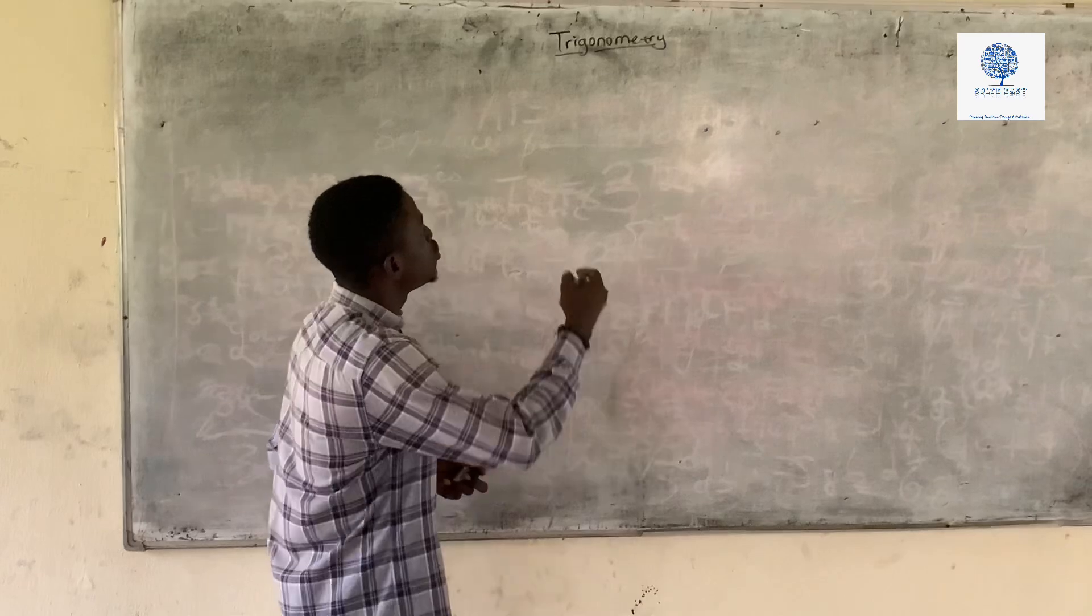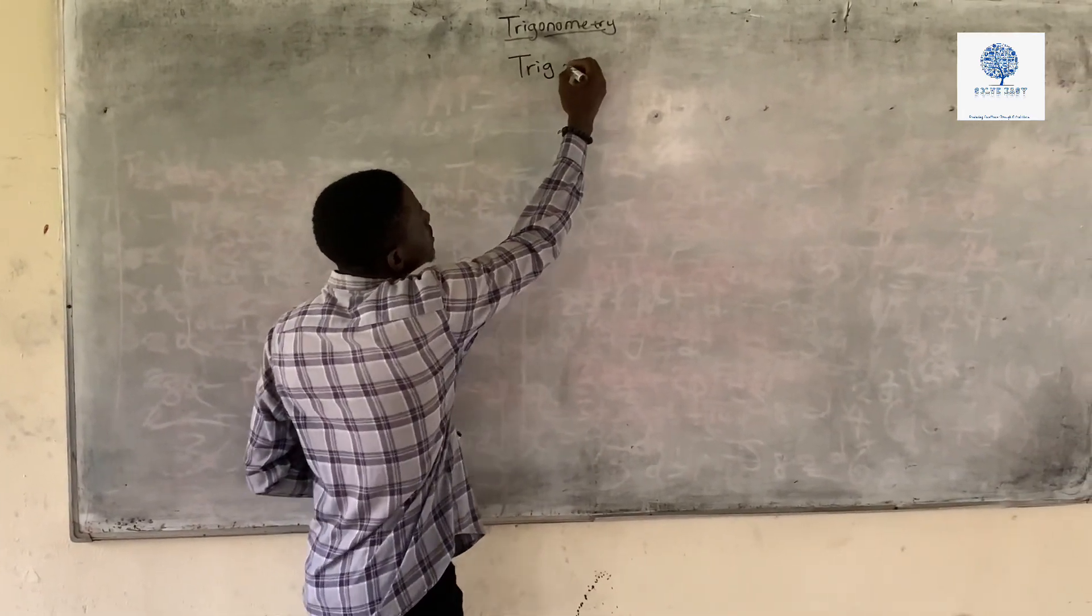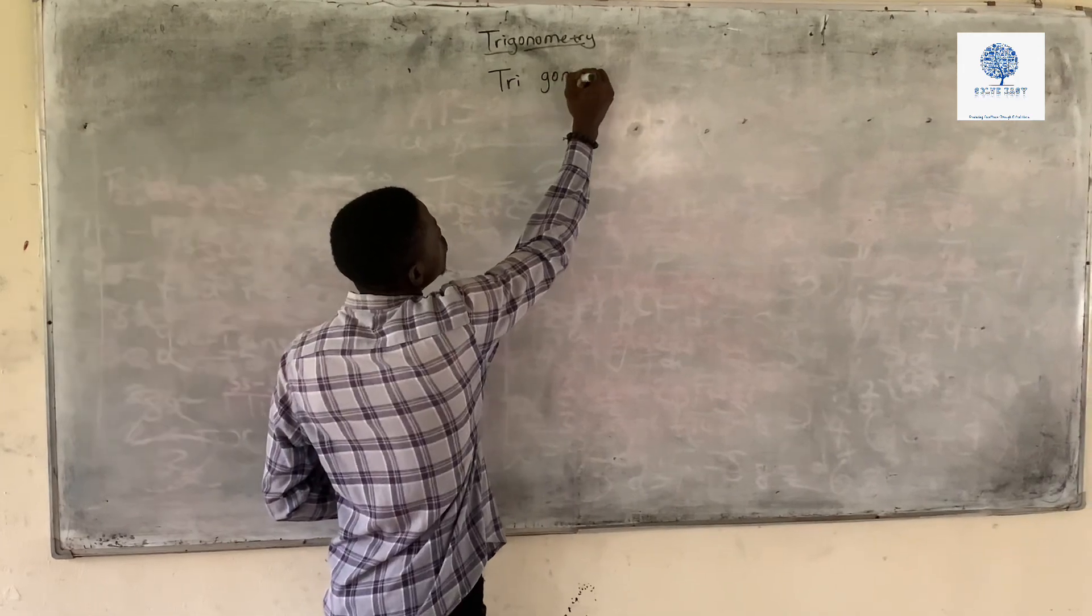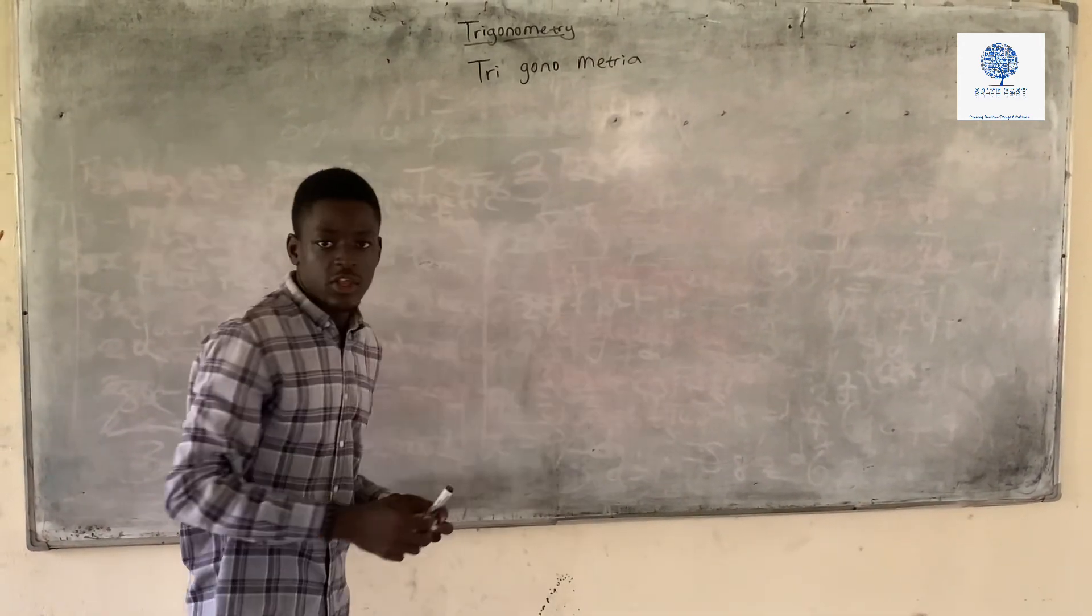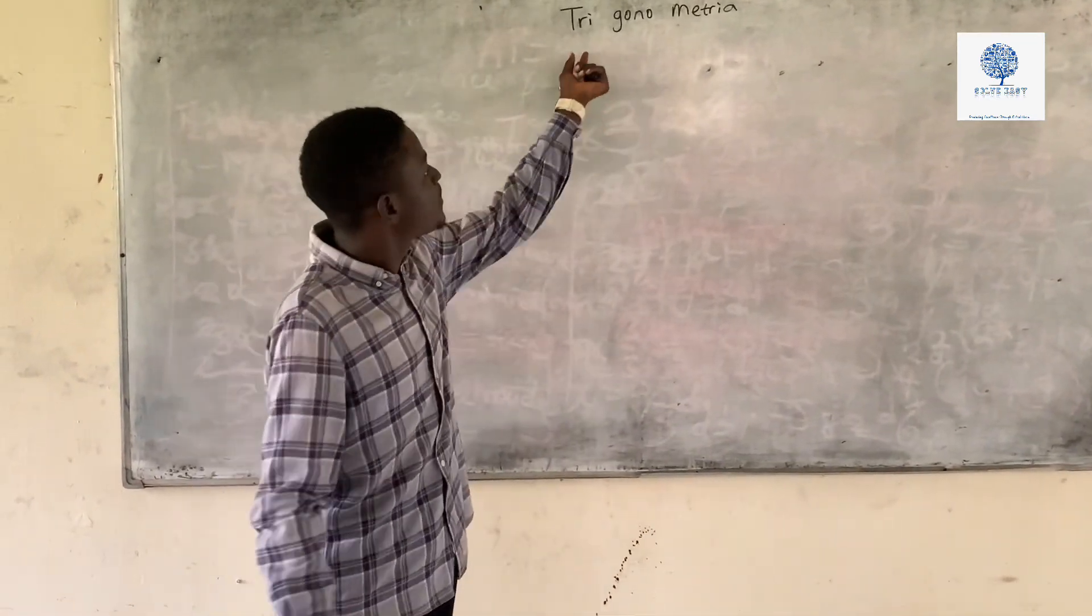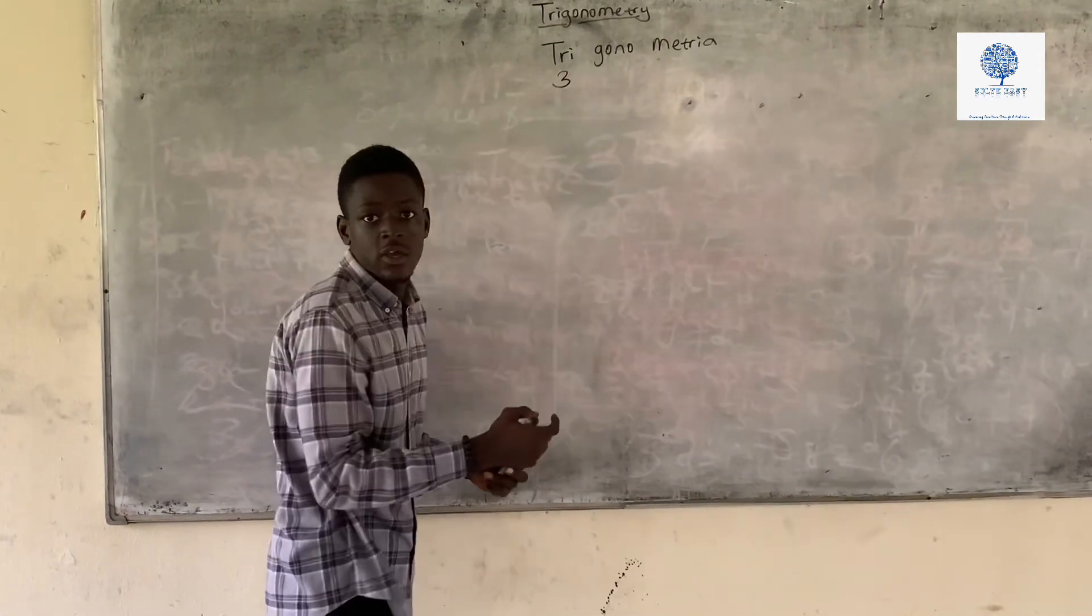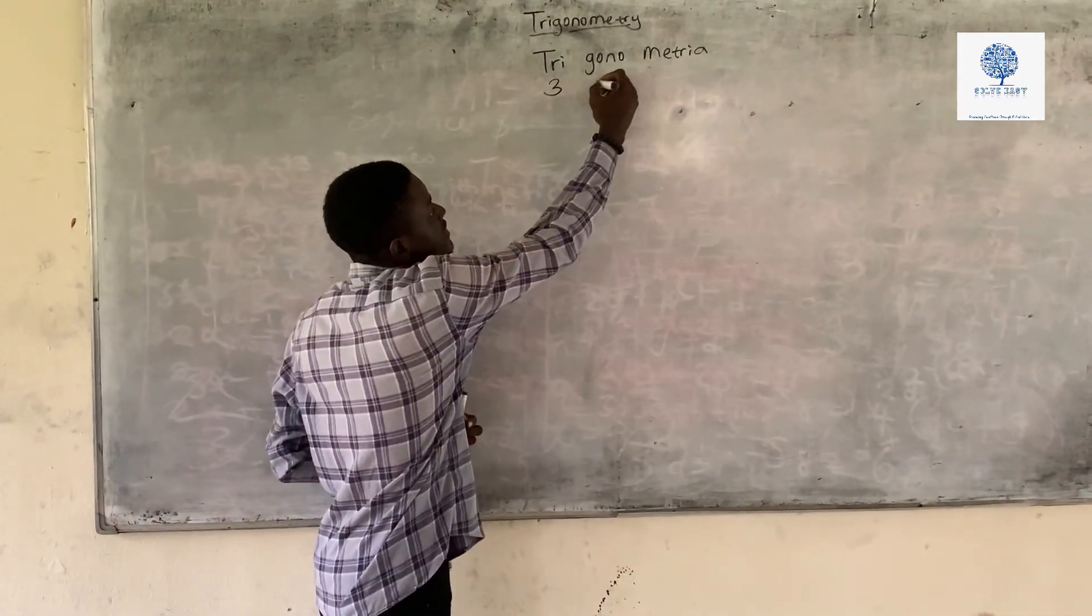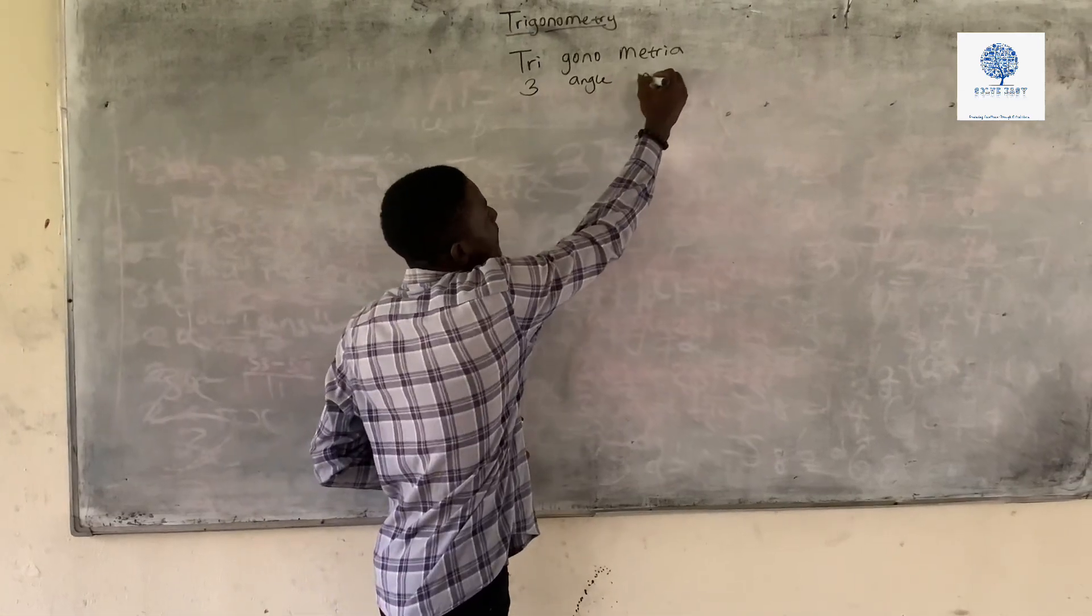So trigonometry was gotten from the Greek word trigonometria, meaning tri is three, gono is angle, and measure is measurement.